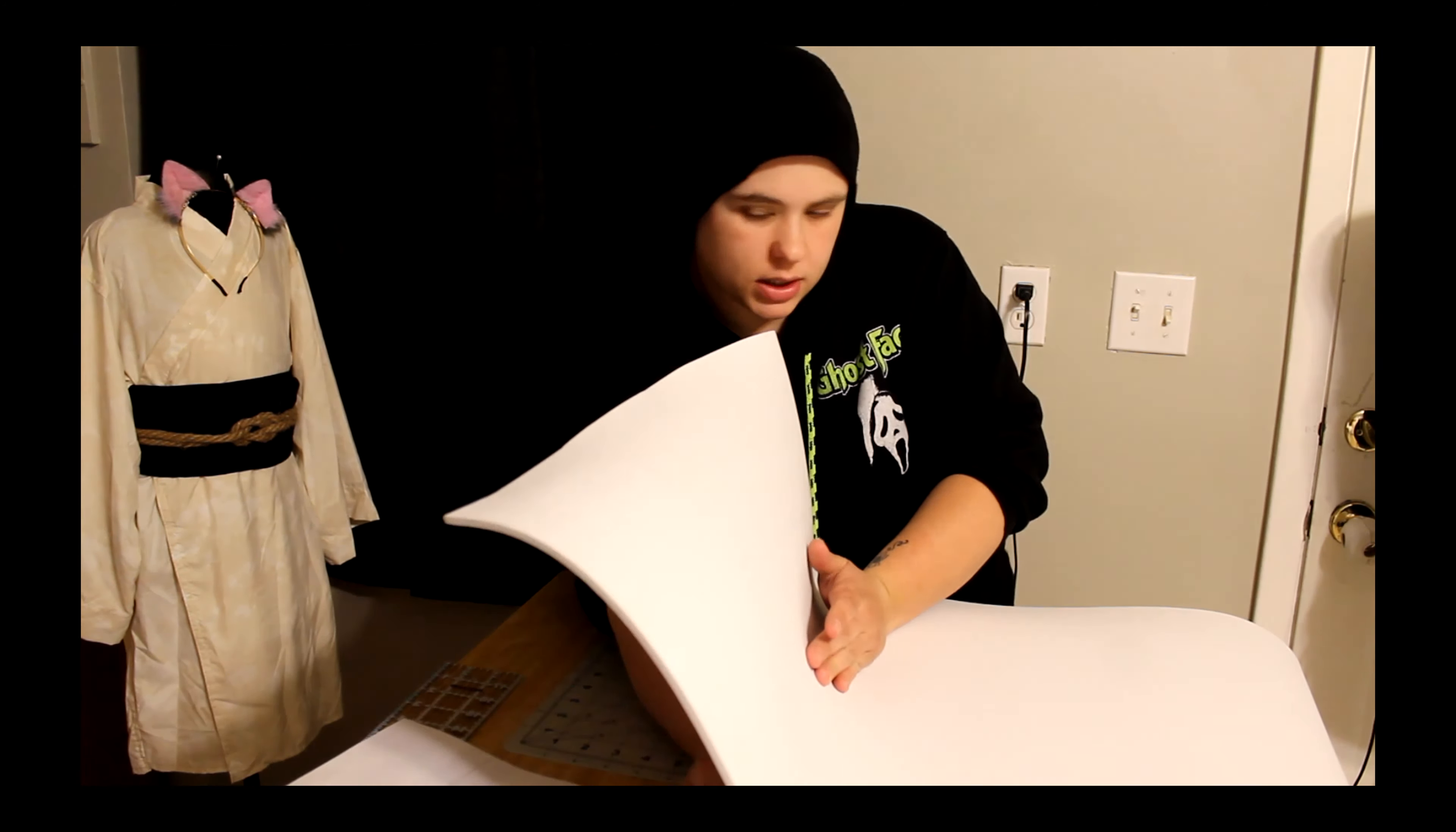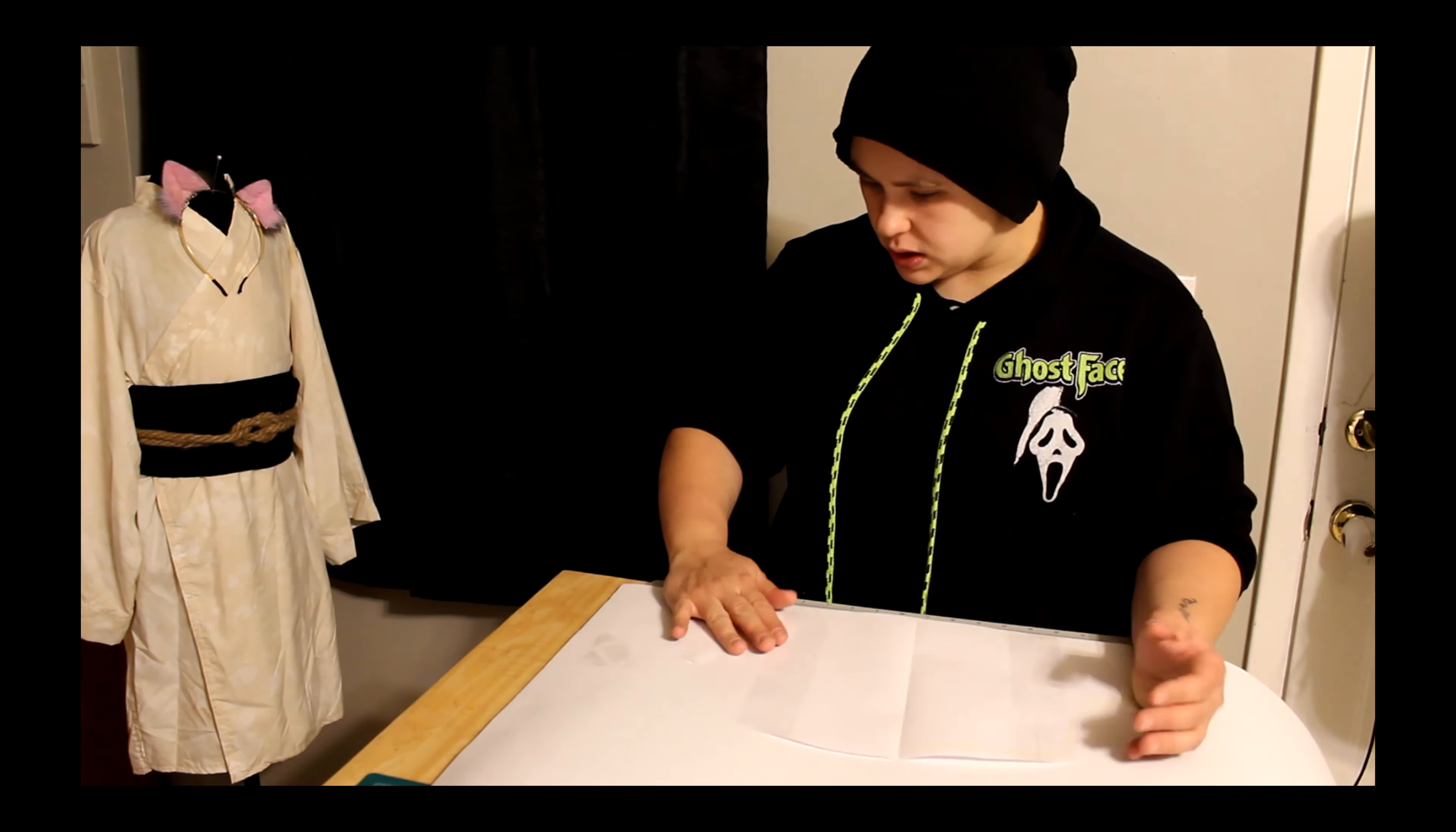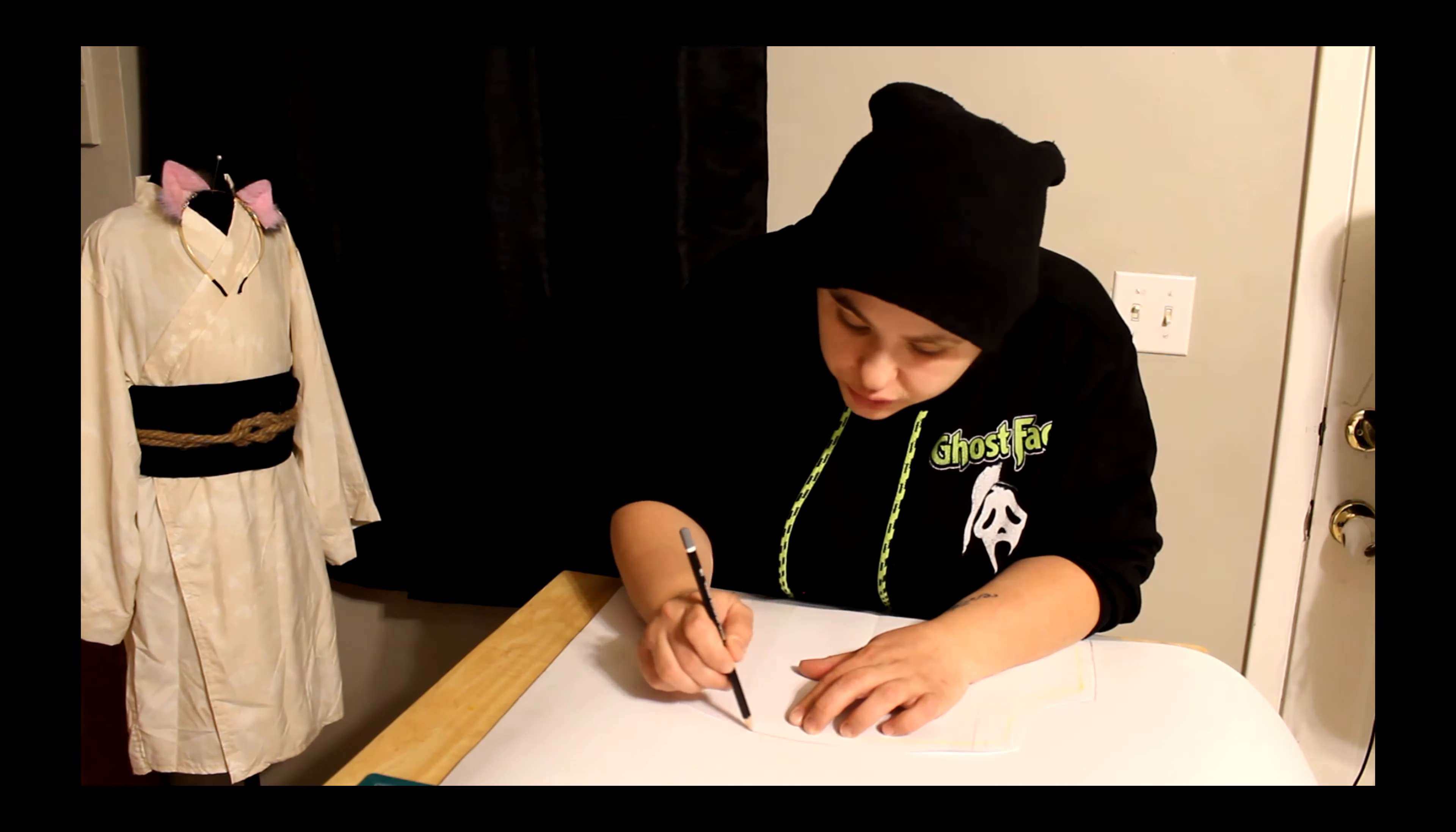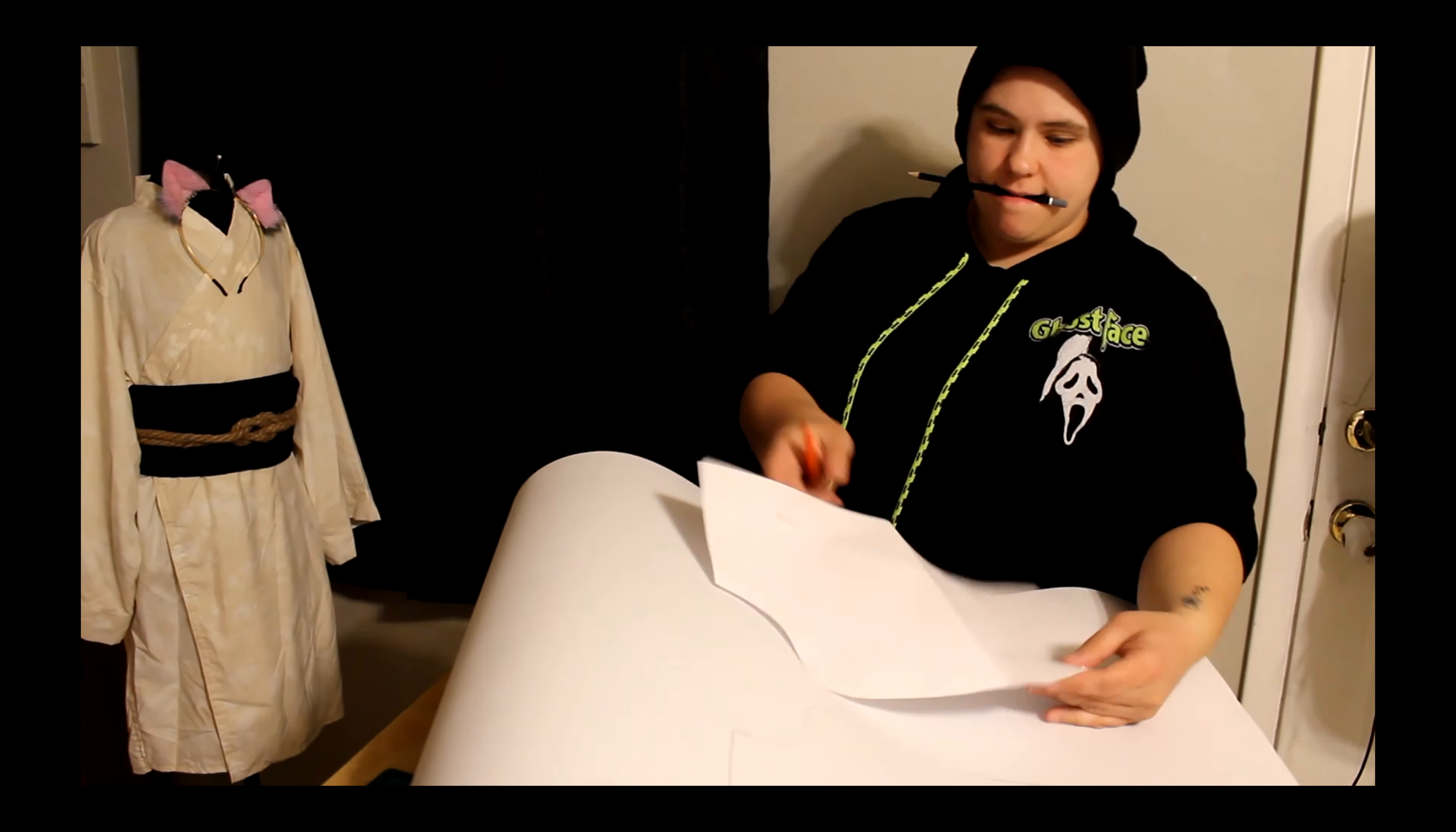Right here we have 5mm EVA foam in white and the pattern that I have made for this person's exact measurements. We're going to basically trace it on twice, but a flipped image of each other. So we're going to mirror it, and then we're going to cut it out with a box cutter. Please make sure you are safe. Please make sure your box cutter is very sharp by checking that with a piece of paper. But also if you're a child doing this, please make sure you have an adult with you to help you.